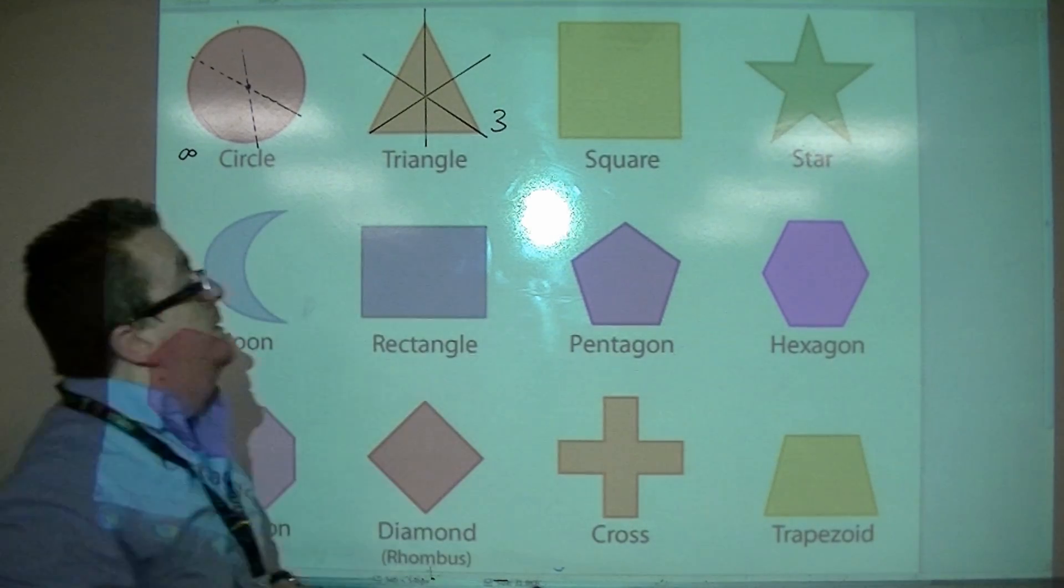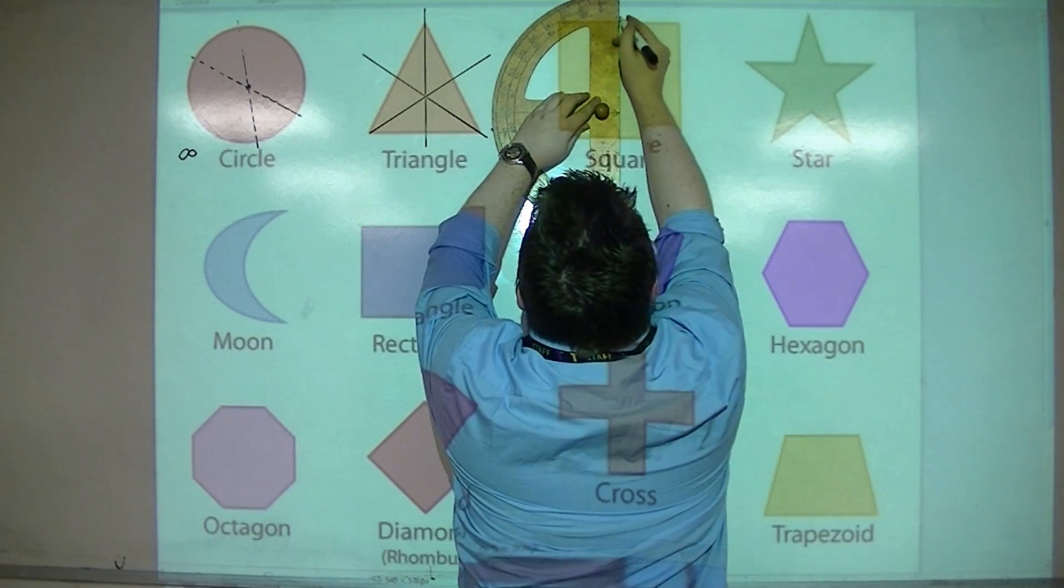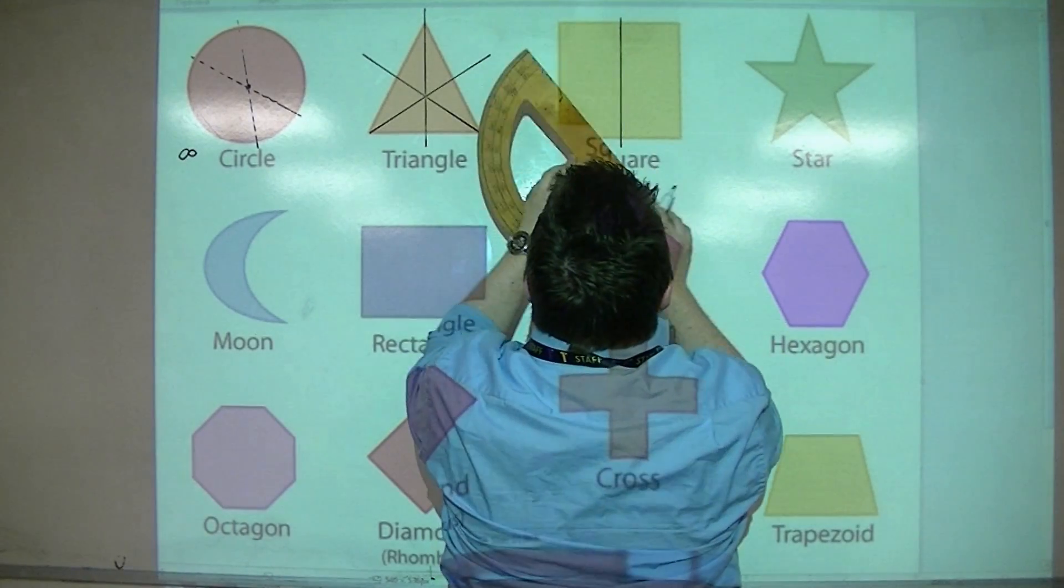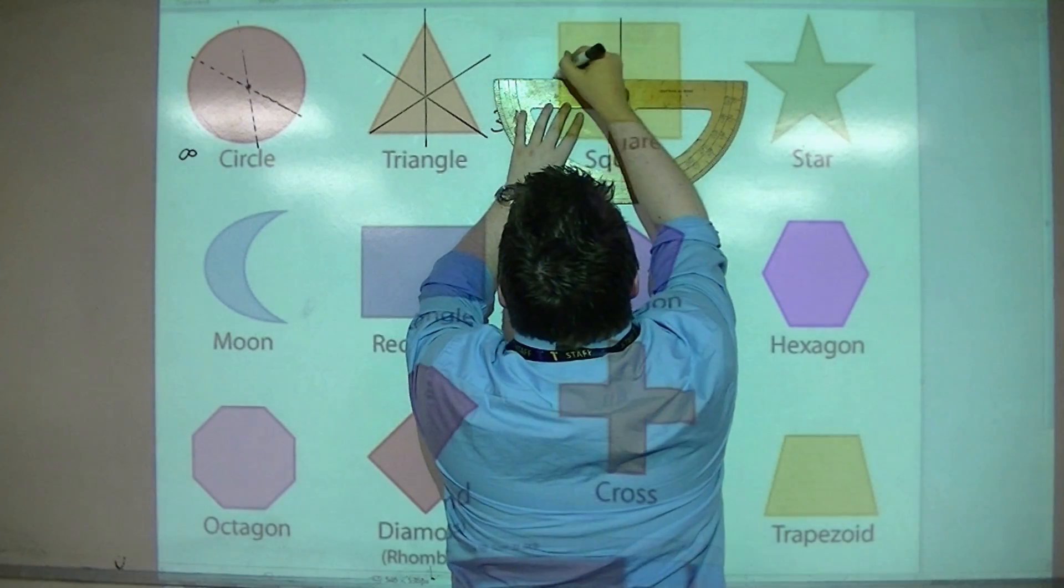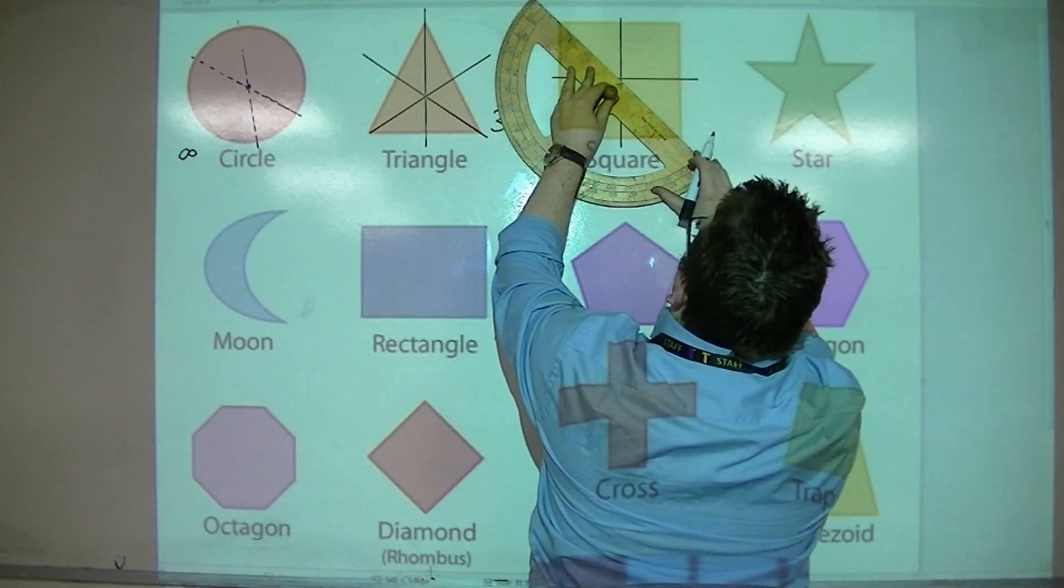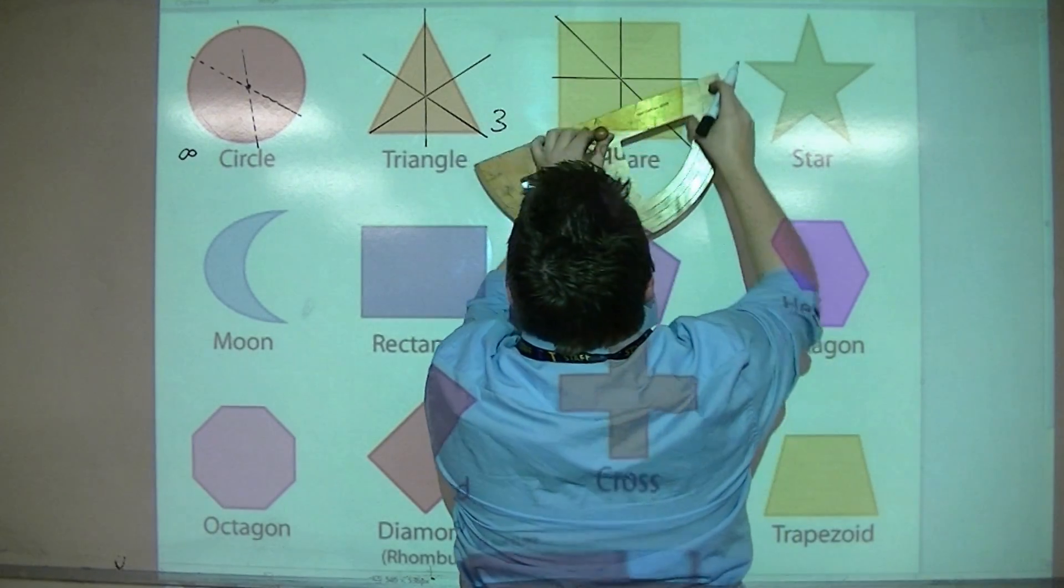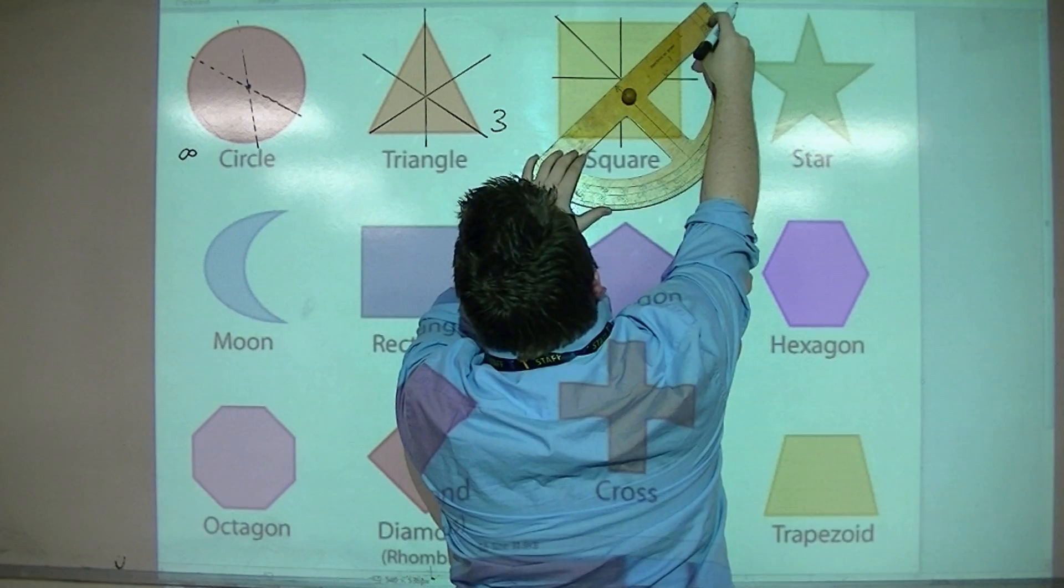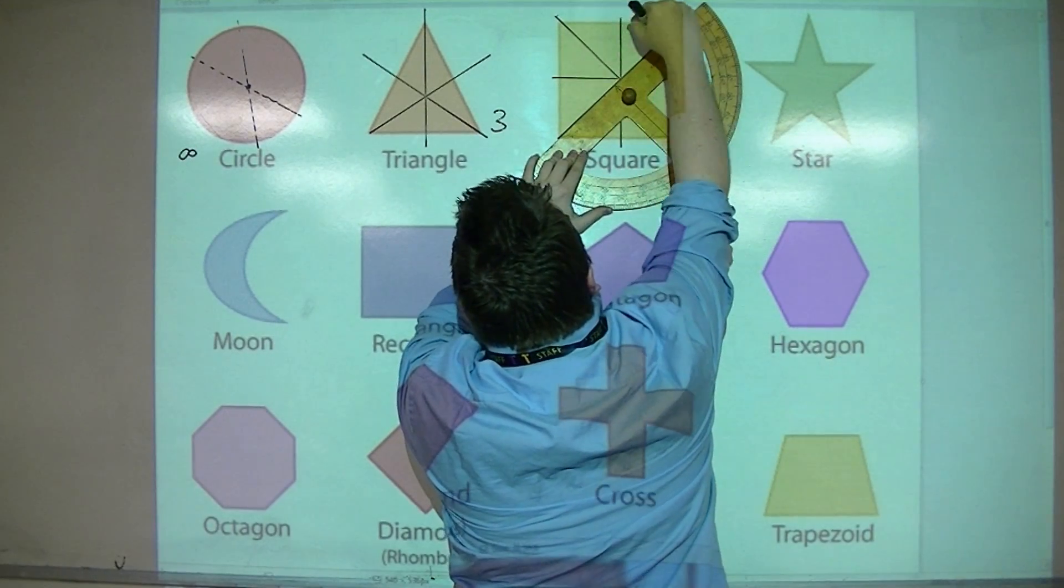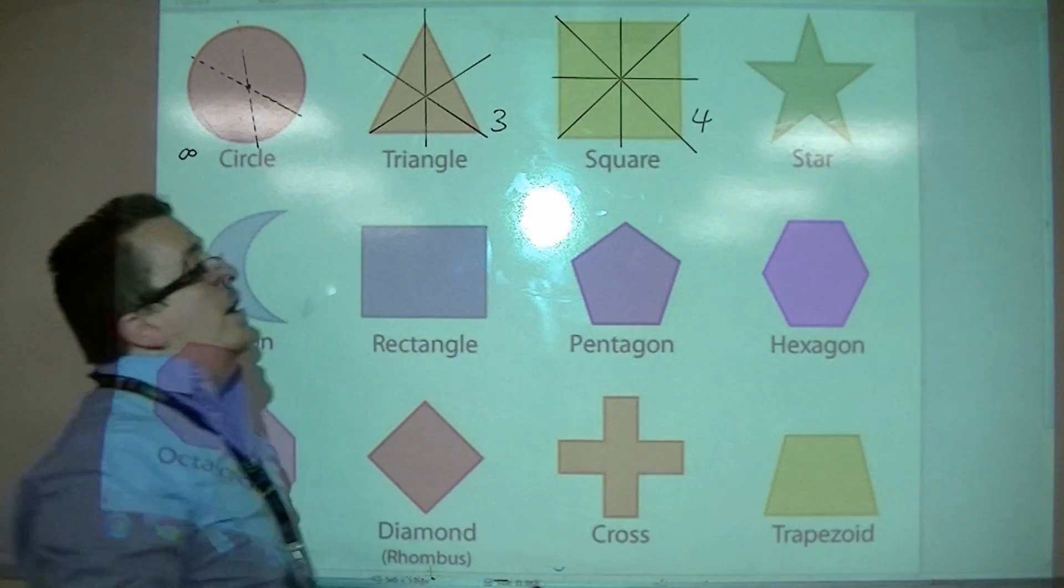The square, well, you can cut it down through the middle, that would be one, you could cut it through the middle, like so, or you could cut it through the diagonal, unlike the rectangle, or you could cut it through the other diagonal. So actually, this one has four lines of symmetry.